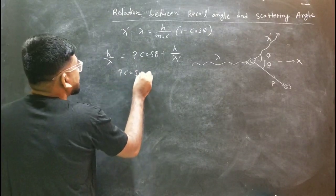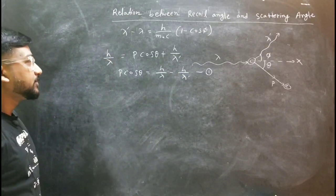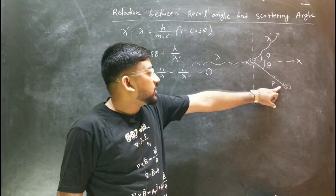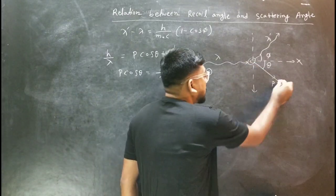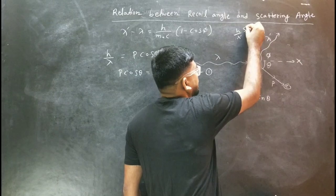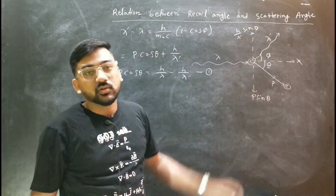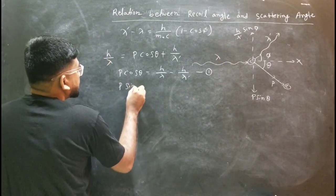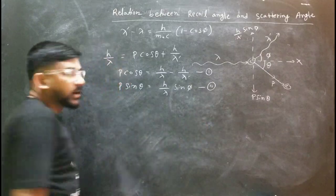So from x-axis momentum conservation we get: p cos theta equals h over lambda minus h over lambda dash cos phi. Call this equation 1. Along the y-axis, the initial momentum is zero, so p sin theta equals h over lambda dash times sin phi. Call this equation 2.